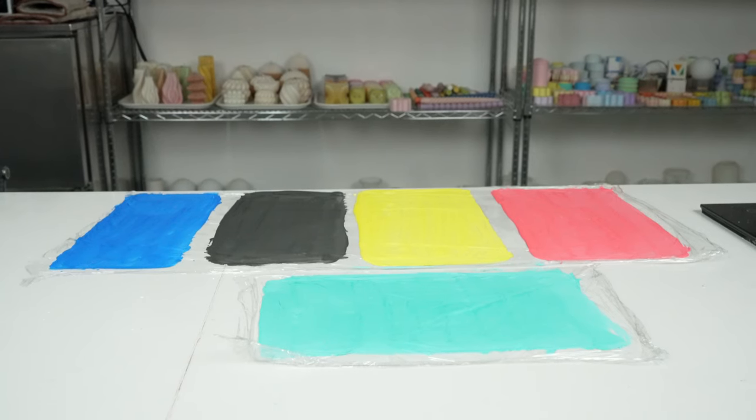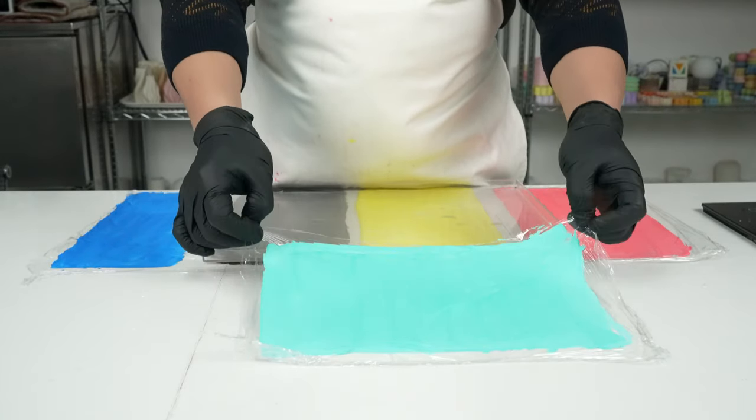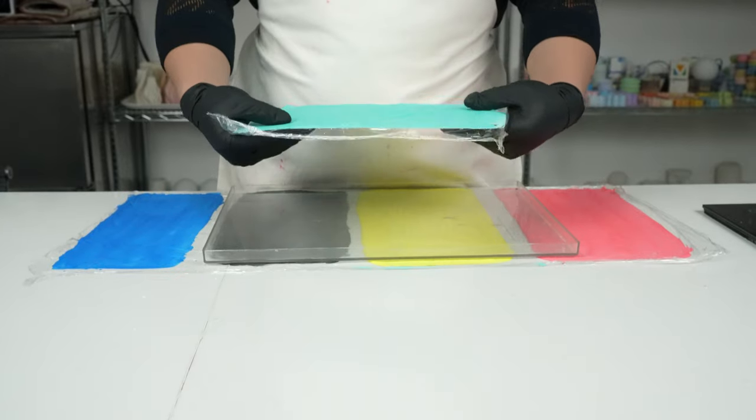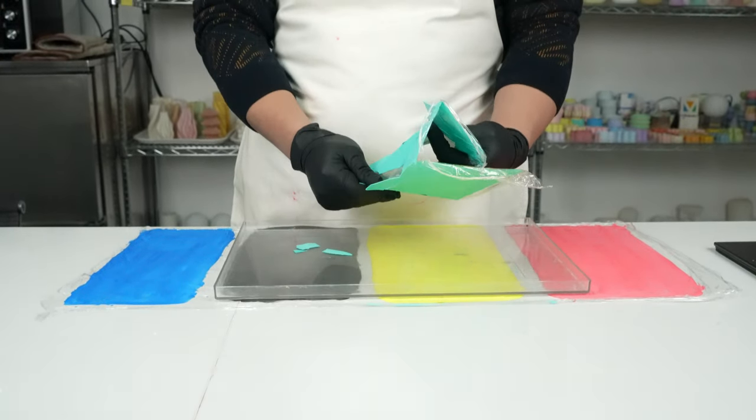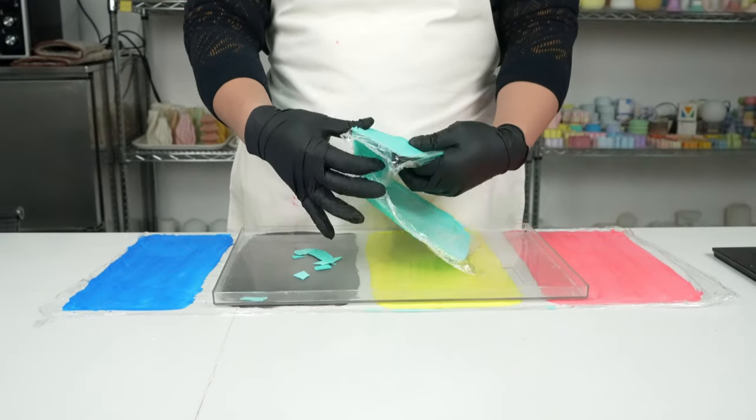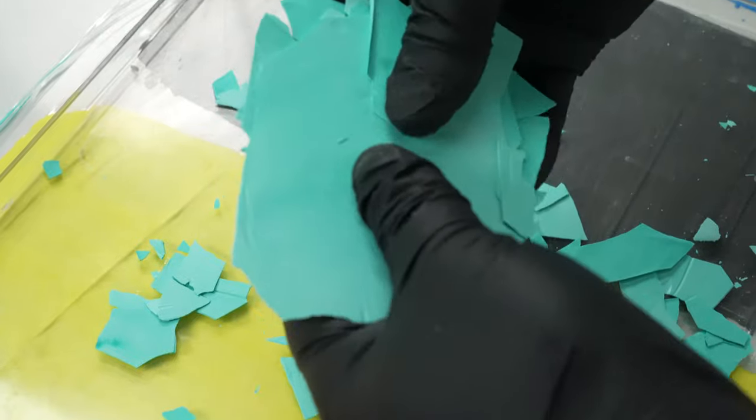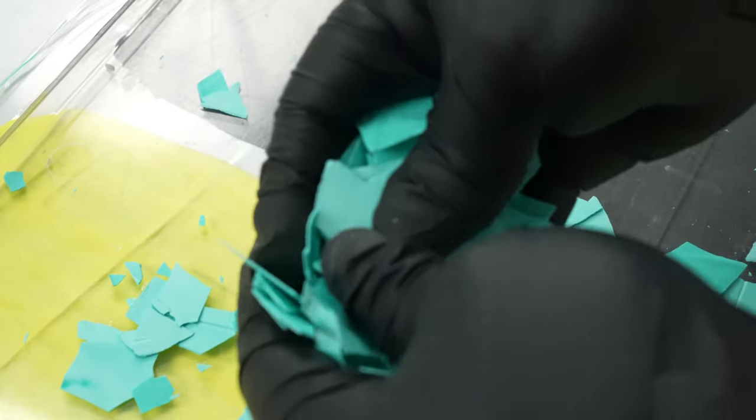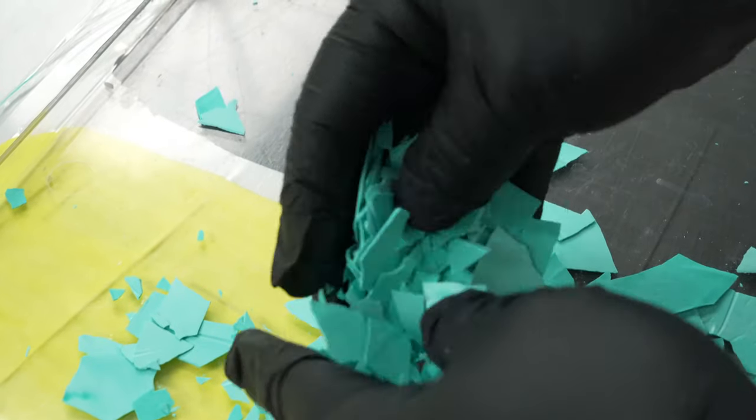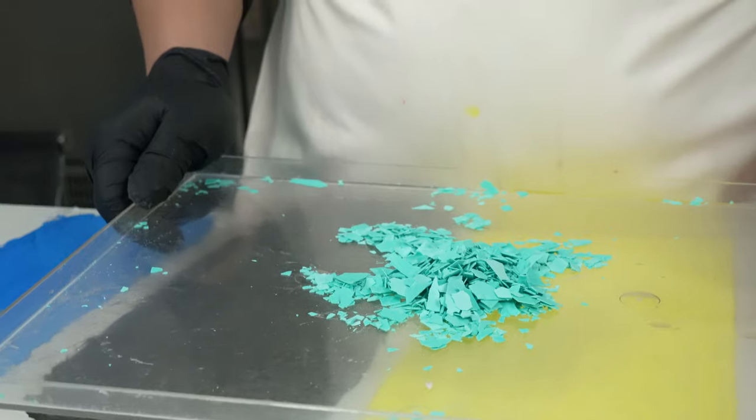When creating terrazzo, the solidification time is around 6 hours. If you pour the liquid mixture onto a horizontal surface, it will take even longer to solidify due to the increased thickness of the layer. Once the terrazzo is solid, we need to separate it from the plastic wrap and turn it into fragments. To do this, gently peel the plastic wrap away from the solid terrazzo. Once the terrazzo is removed from the plastic wrap, place it in a tray or container.